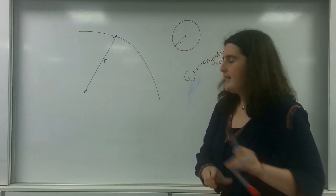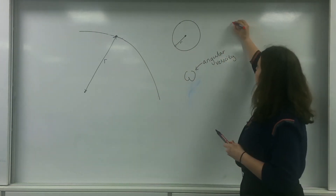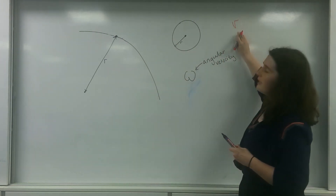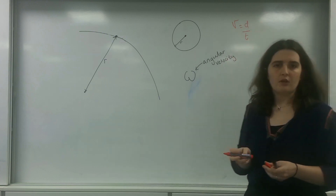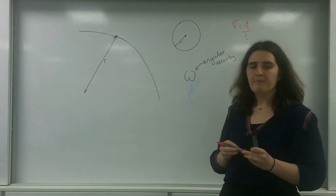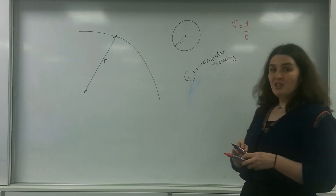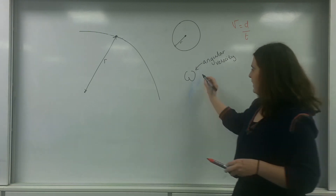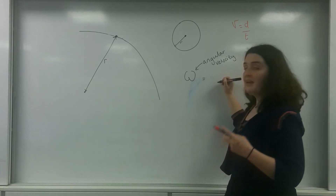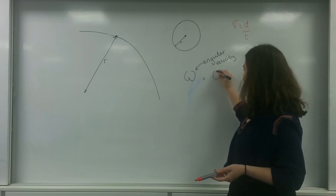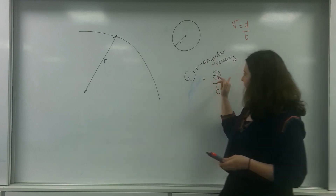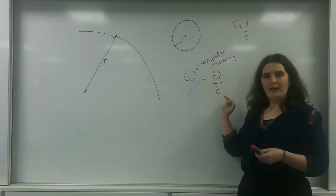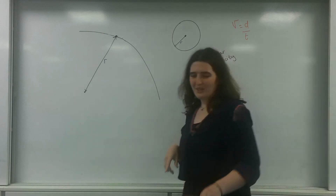Just to remind you, velocity — V — is distance over time, or displacement over time. Angular velocity is the angle, which I'm going to write as theta, over time. So it's the amount of angle you're sweeping out per unit time, and this is why it's used for circular motion.